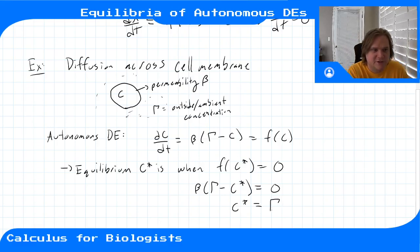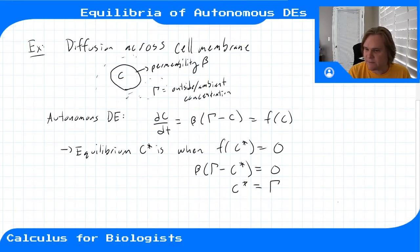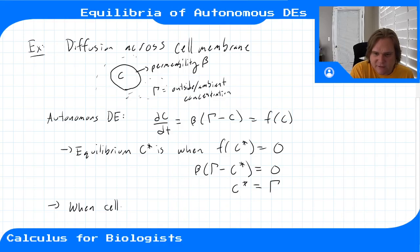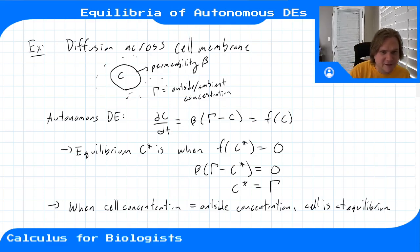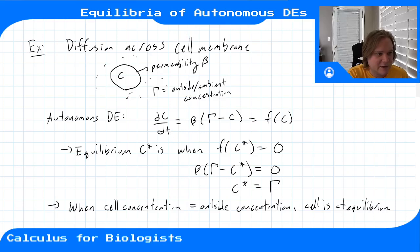The equilibrium concentration c* = γ means that when the concentration of the ion inside the cell equals the concentration outside the cell, the cell is at equilibrium. In a true physical sense, the flux in is matching the flux out, so there's no change in the cellular concentration of this particular ion.